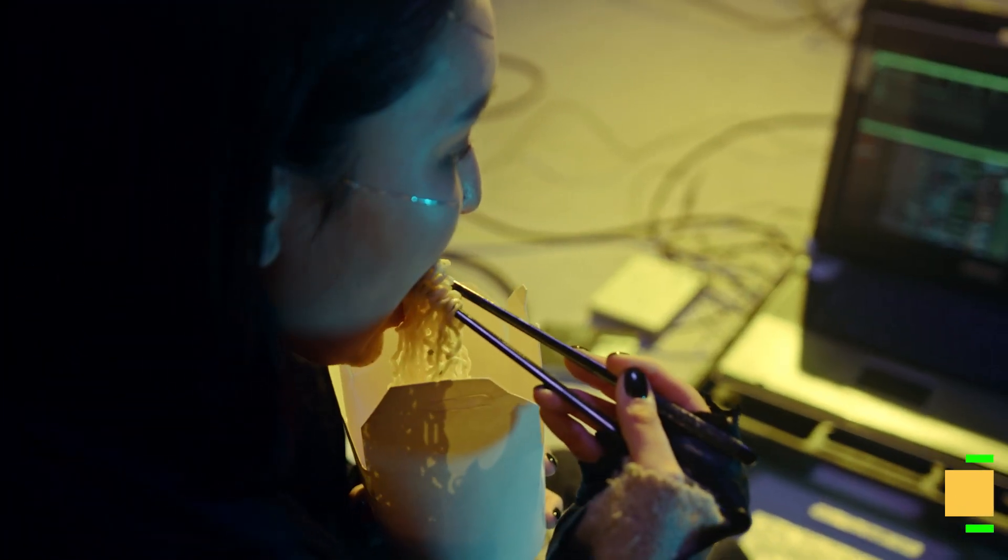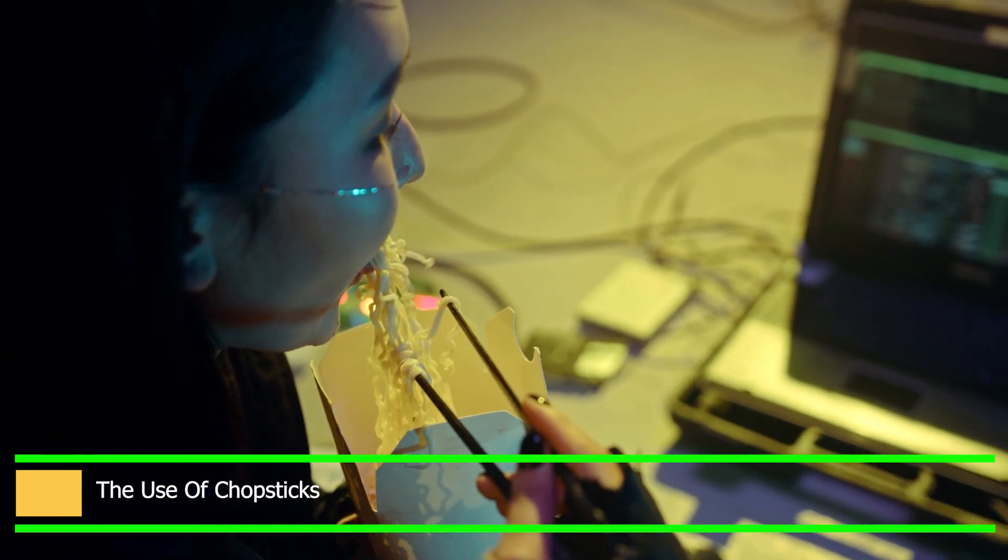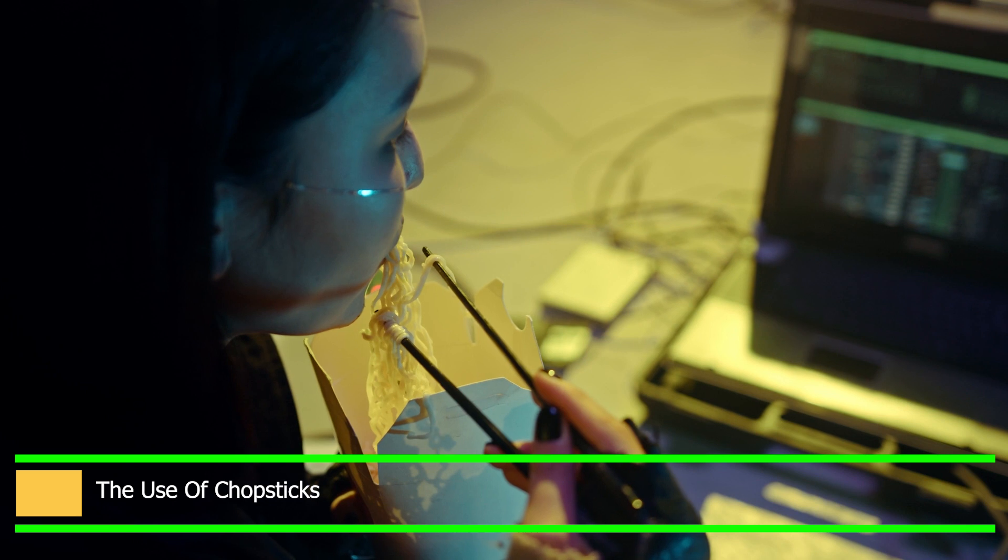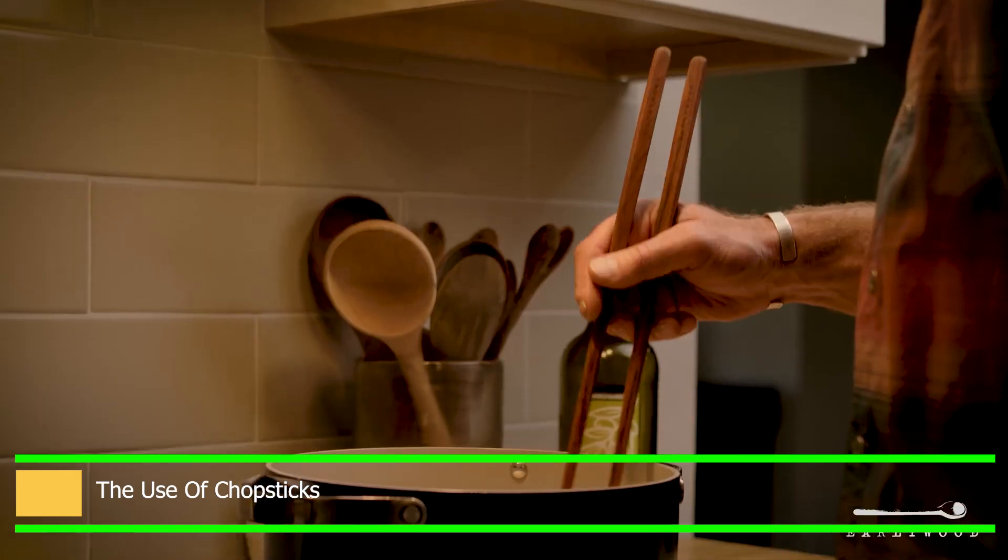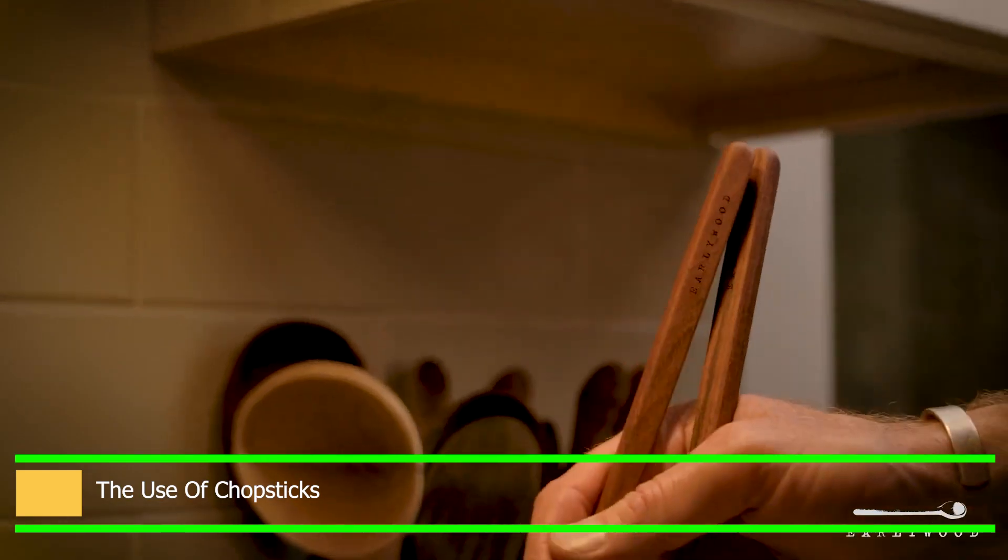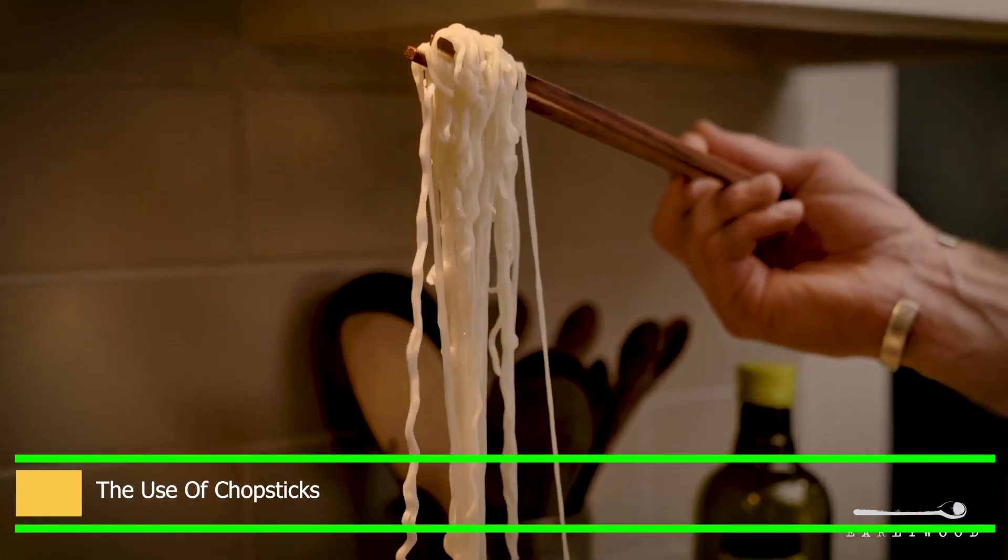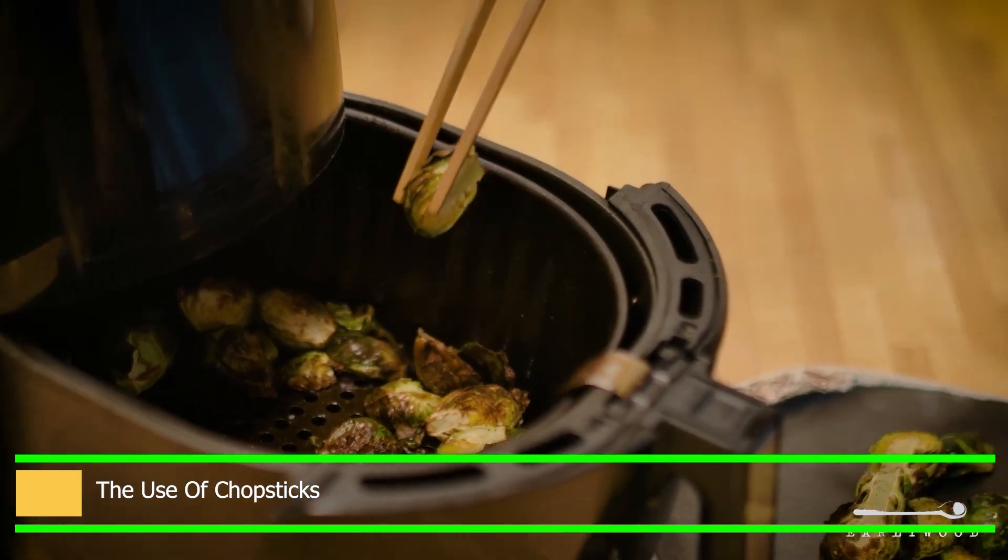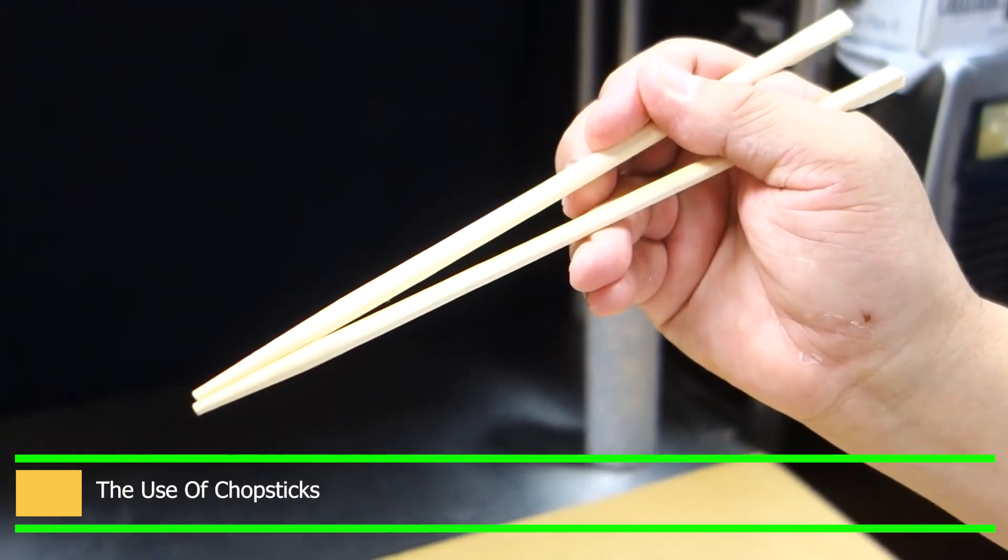People started using chopsticks for dining in the year 400 AD. Due to a population growth, China experienced a food and fuel crisis, forcing cooks to get inventive in the kitchen. Chefs were obliged to alter their cooking methods due to a decrease in the supply of wood for fires. Chefs began to explore by chopping food into extremely little pieces. They were aware that food would cook more quickly if it were cut up into smaller pieces. This was a resourceful method of preserving food while using less firewood and other resources.